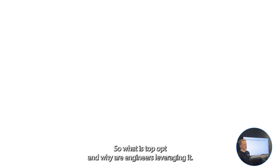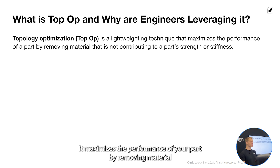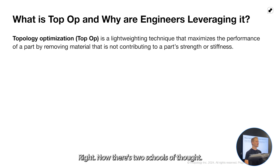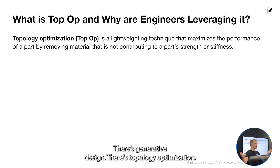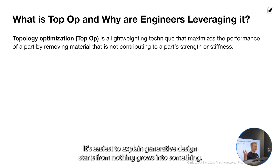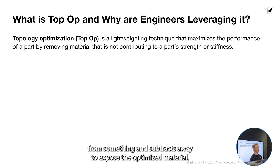What is topology optimization and why are engineers leveraging it? Topology optimization is a lightweighting technique. It maximizes the performance of your part by removing material that's not contributing to the part's strength or stiffness. There are two schools of thought: generative design and topology optimization. Generative design starts from nothing and grows into something. Topology optimization starts from something and subtracts away to expose the optimized material.